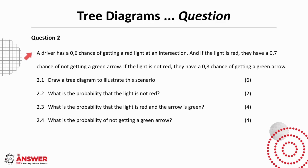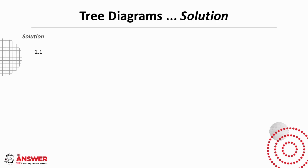Question 2 is about the chances of a driver getting a red light and/or a green arrow, and it is asking you to first draw a tree diagram and then calculate some probabilities. Pause the video here to give this question a try. So first in our tree diagram we will put the options of the light being red or not being red, and we're told that the chance of the light being red is 0.6 and the chance of it not being red is therefore 0.4, because these have to add up to 1.